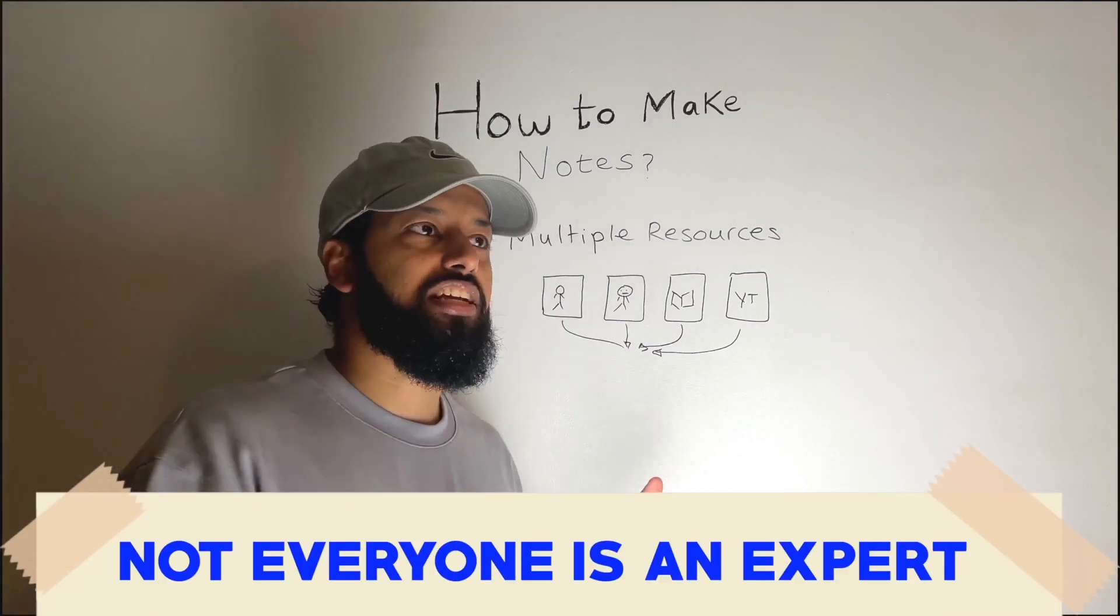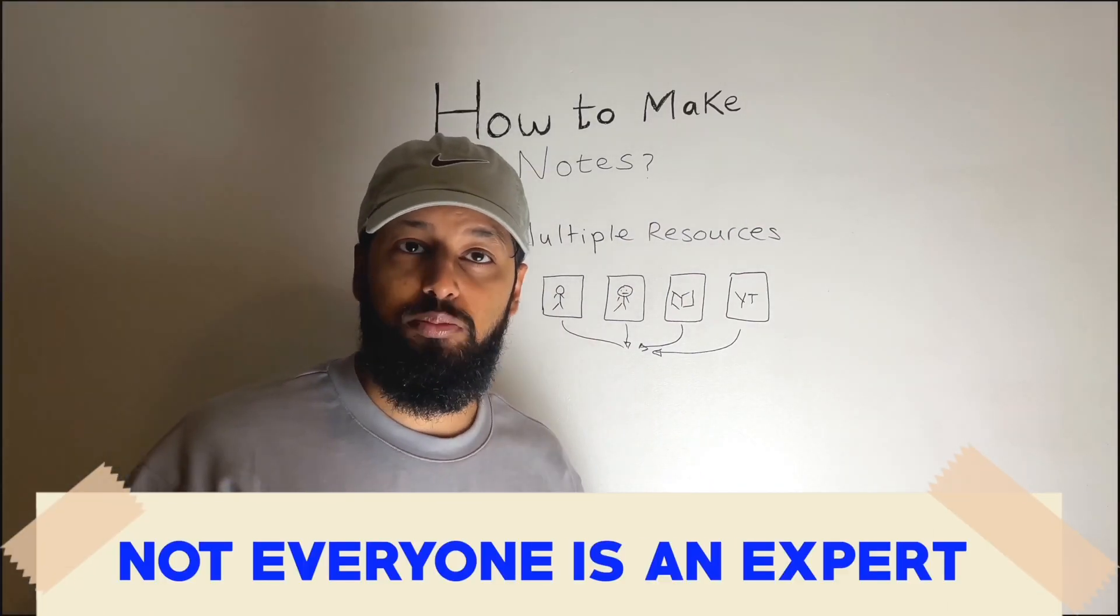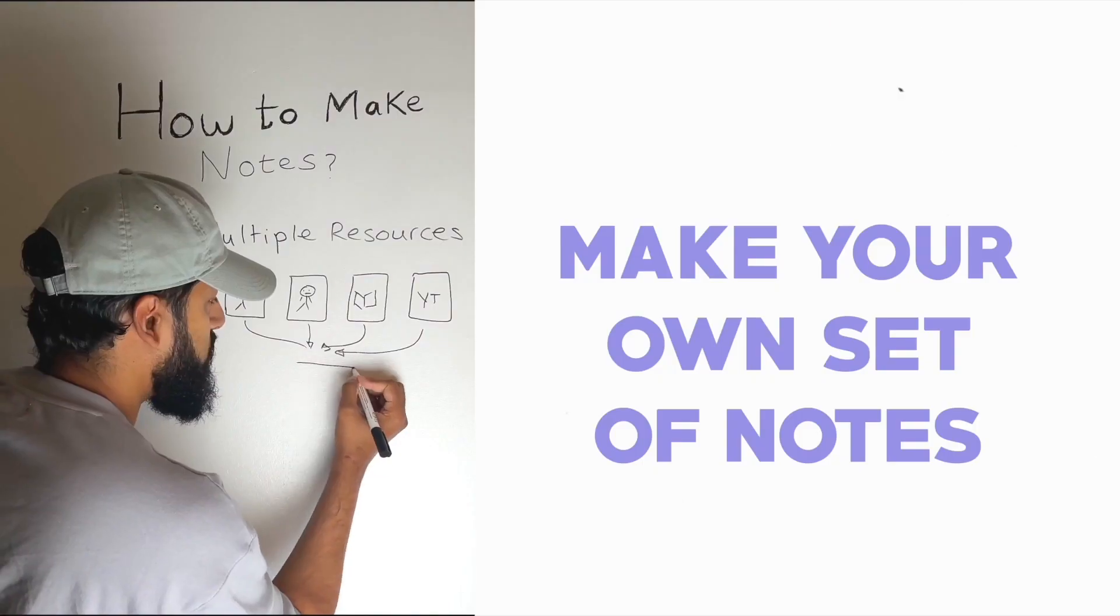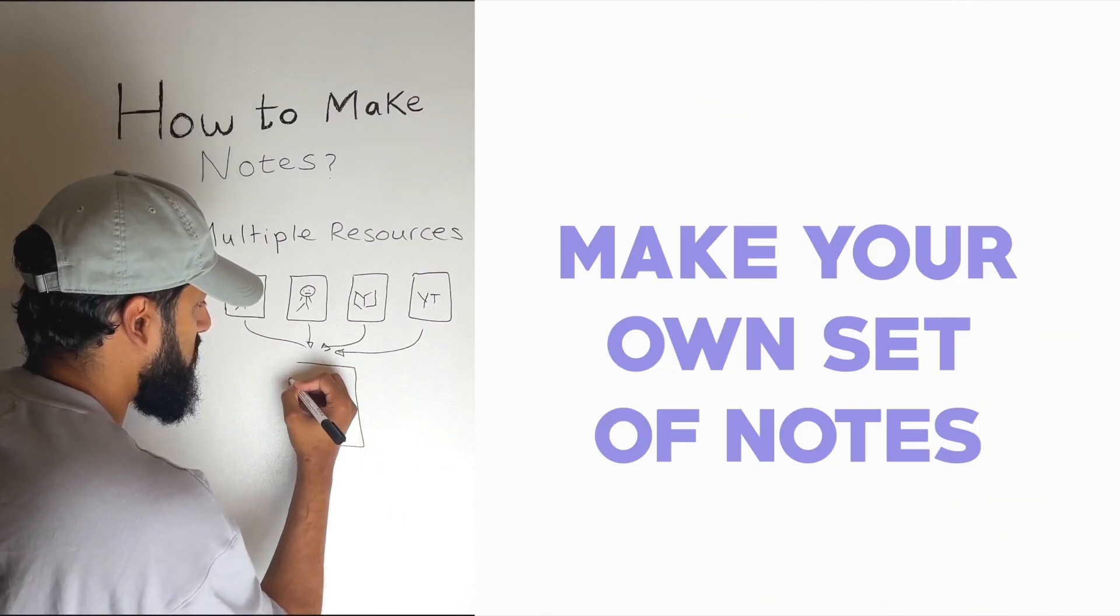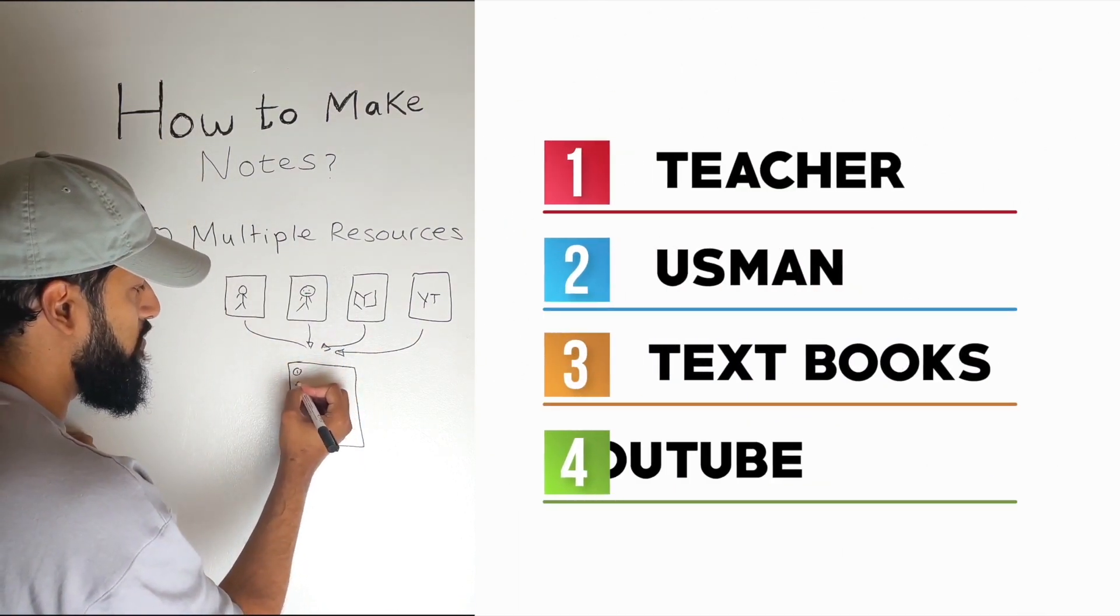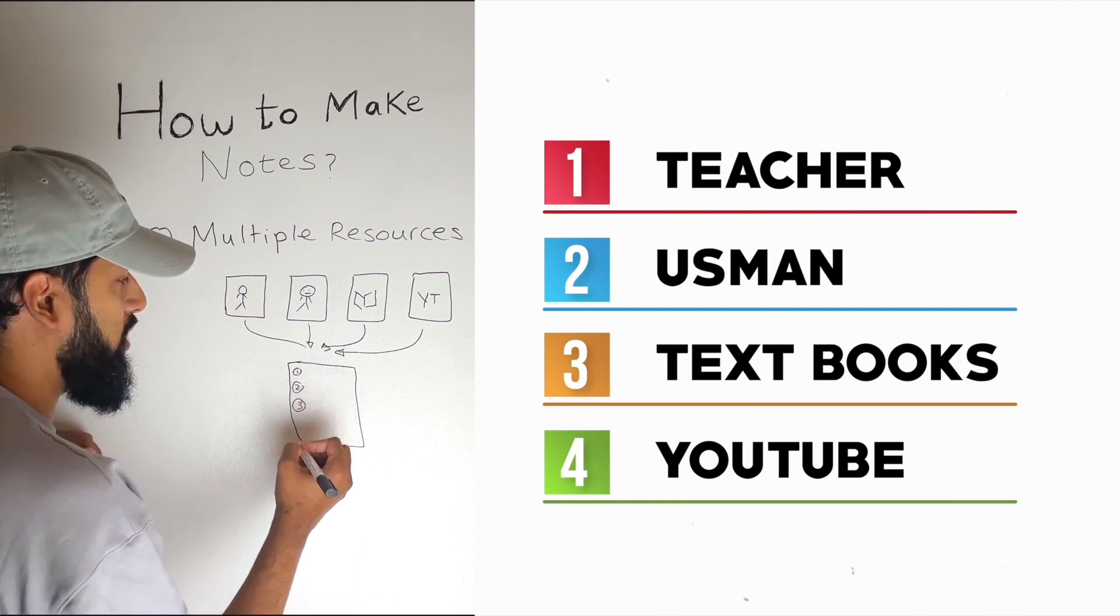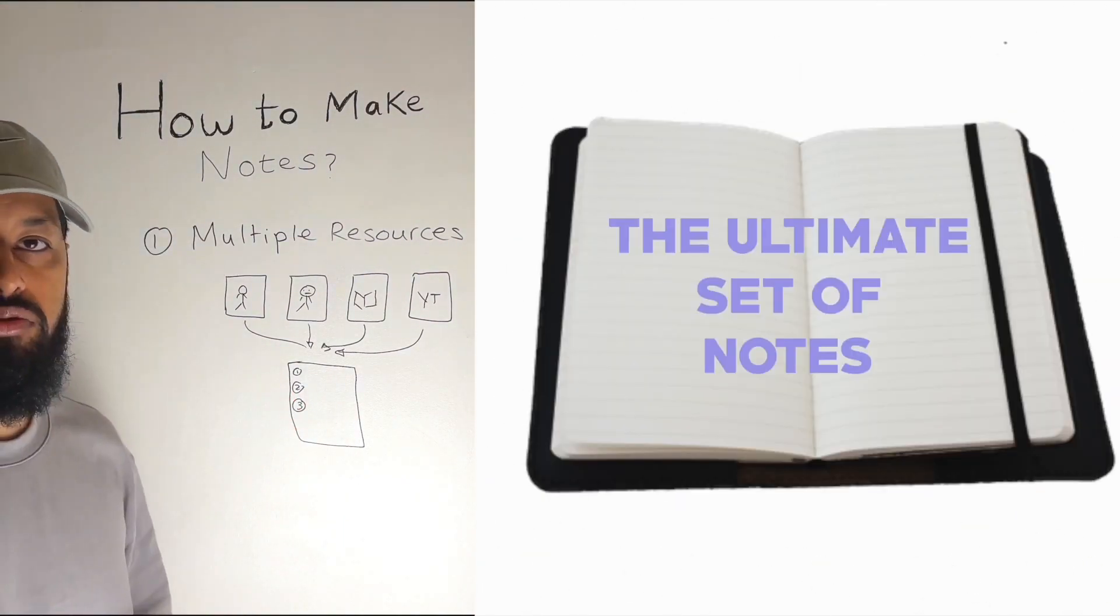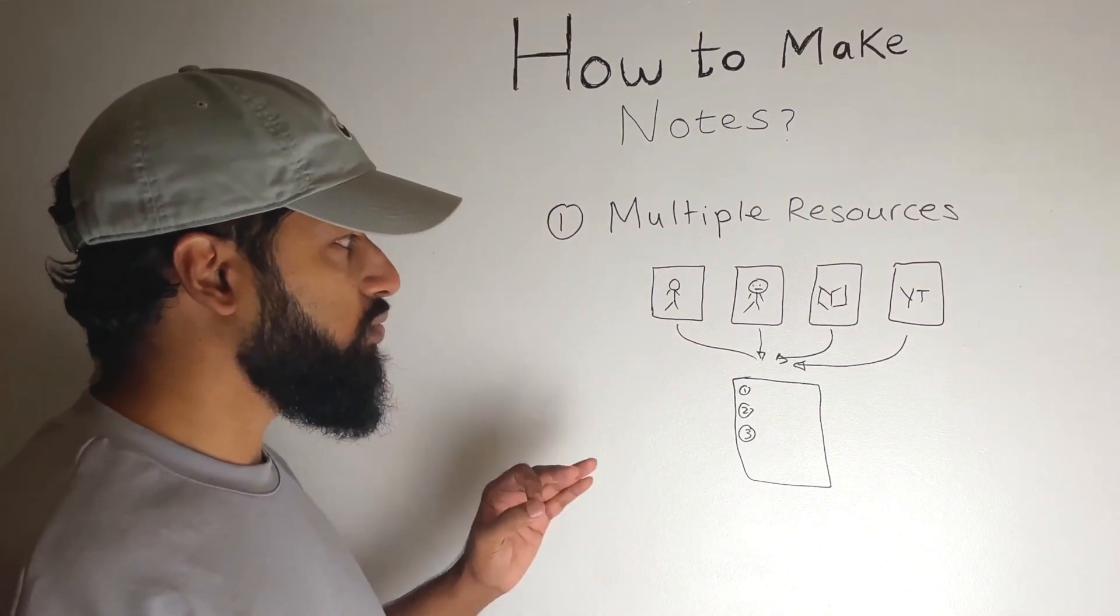Not everyone is an expert on every single topic within that subject. So you want to find the best explanation for that topic and what you're going to do is you are going to make your own set of notes based on that. So point one might have come from someone else. Point two might have come from someone else. Three from someone else and so on, but what you've got is the ultimate set of notes and I like to call this your one source of truth.